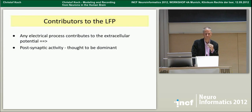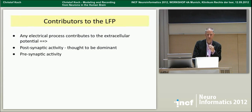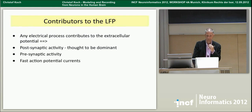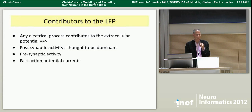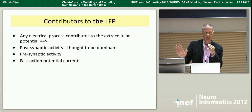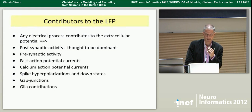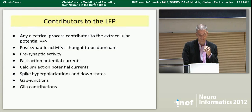The contributors to the local field potential include every piece of excitable tissue, scaled with inverse distance. Primarily it's post-synaptic activity — the LFP and particularly the EEG are thought to be dominated by post-synaptic activity. However, there's also a pre-synaptic component that people know very little about. The fast action potential is thought not to contribute much, because action potentials need to be highly synchronized to contribute significantly. We also know almost nothing about the contributions of spike hyperpolarizations, down states, gap junctions, and glia — which is quite shocking, since this is a basic variable most of us use to understand the brain.